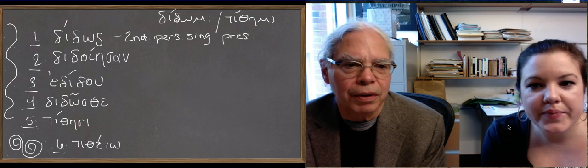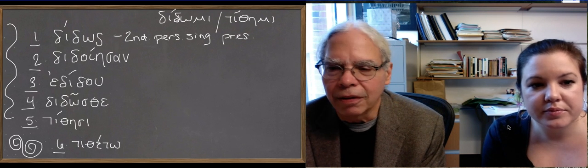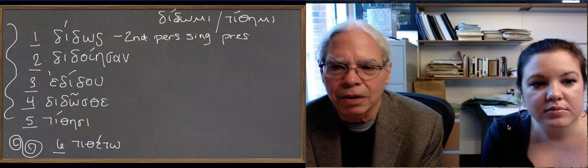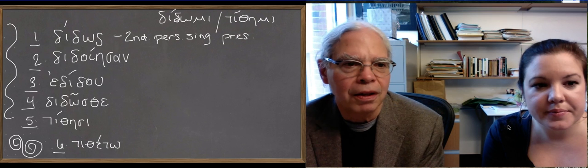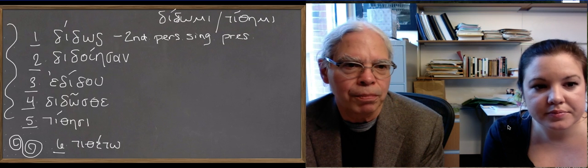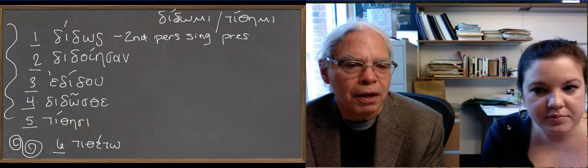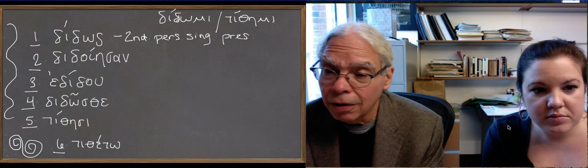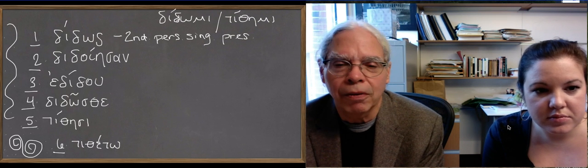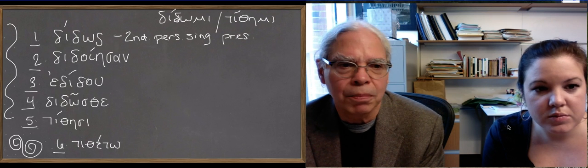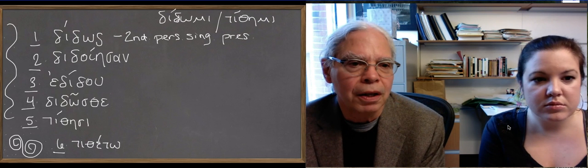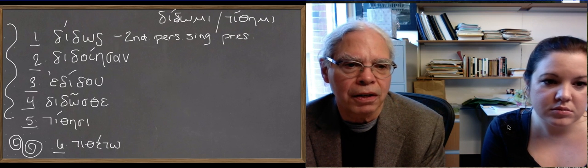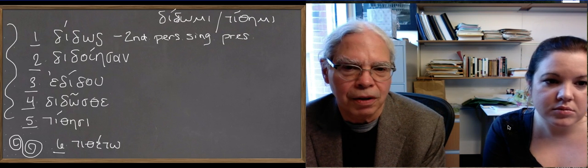Let's look at the next one, διδοῖεν. We ask the same question every time. What kind of reduplication does it have, if any? And it's the same. It's an imperfective aspect form. The next thing you notice is, so you've got the δι, and now you have δο. So there's the vowel alternation in the stem. We're not going to worry about it. But the next thing you have is ῖεν ending.